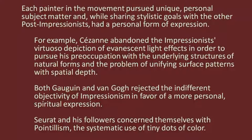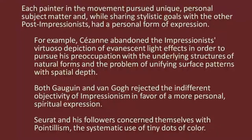Each painter in this movement pursued a unique personal subject matter while sharing stylistic goals with the other Post-Impressionist painters — they all had a personal form of expression, which is quite evident when you go through the paintings by Cézanne, Gauguin, Seurat, Toulouse-Lautrec, and all. For example, Cézanne abandoned the Impressionists' depiction of evanescent light effects in order to pursue his preoccupation with the permanent structures of natural forms and the problem of unifying surface patterns with spatial depth. Both Gauguin and Van Gogh rejected the indefinite objectivity of Impressionism in favour of a more personal, spiritual expression. Seurat and his followers concerned themselves with Pointillism — the systematic use of tiny dots of colour.